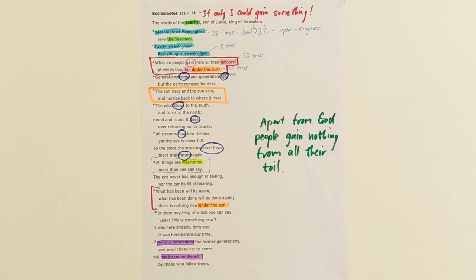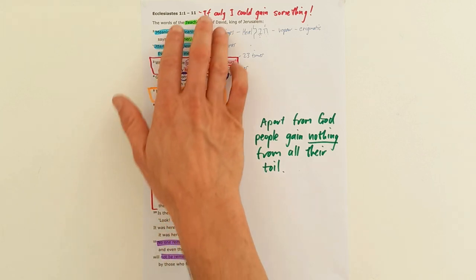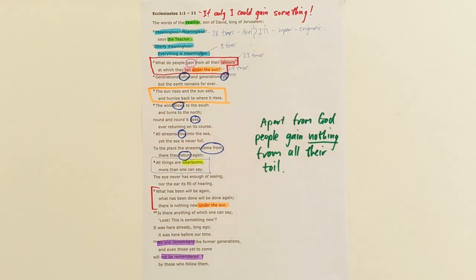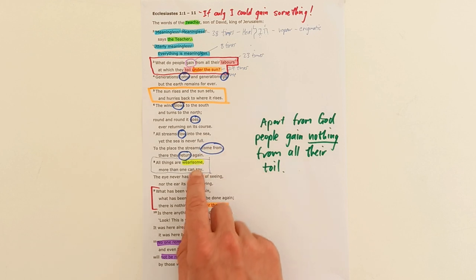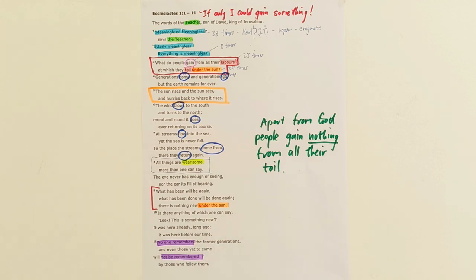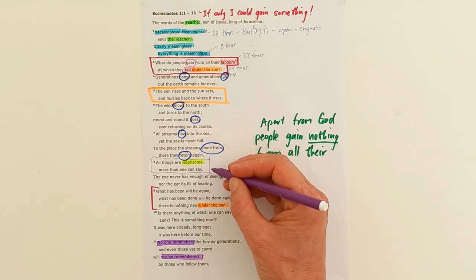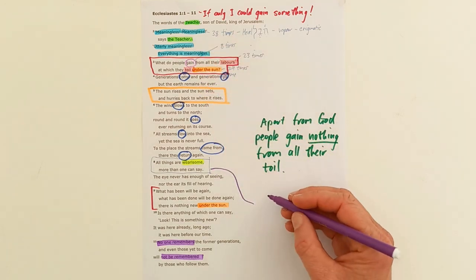Those yet to come won't be remembered by those who follow them. So why do we work so hard? Apart from God, people gain nothing from all their toil. As we go through this book, he's going to give us a more hopeful perspective, but in this opening passage he doesn't give us that. He actually leaves us in the depths. He's saying it is all meaningless, it's enigmatic, we can't grab hold of this play and repeat life in this world. As you observe it as one under the sun, it just leaves him feeling weary.